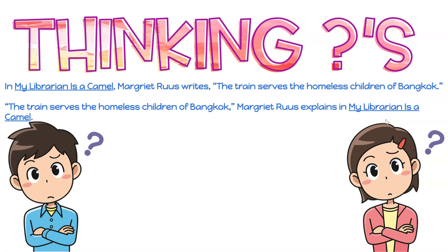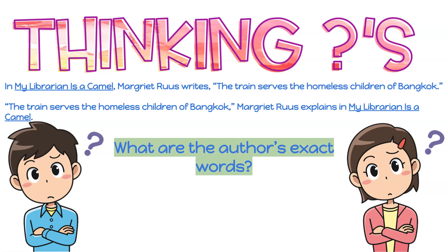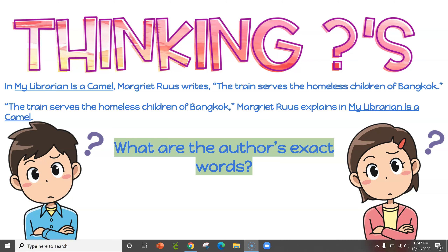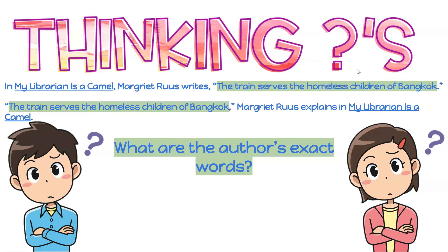Let's take a look at our thinking questions to help us quote text from a source, whether it be a book, a magazine article, or anything else. First ask yourself: what are the exact words? Using our examples, the exact words in My Librarian is a Camel, Margaret Roos writes, are 'The train serves the homeless children of Bangkok.' In the other format: 'The train serves the homeless children of Bangkok,' Margaret Roos explains in My Librarian is a Camel. Can you identify the exact words that she said? That's right — the words are: 'The train serves the homeless children of Bangkok.'